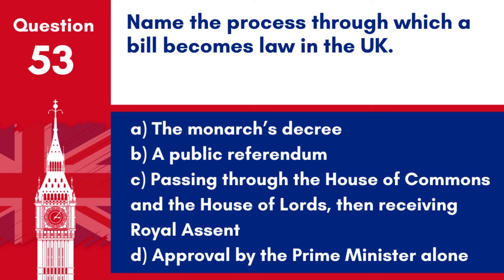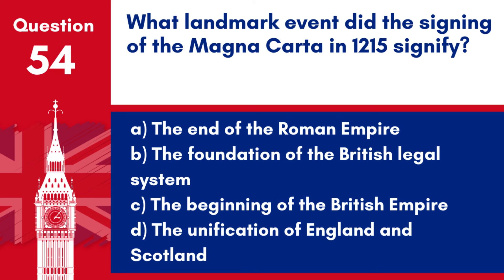Answer: c. Passing through the House of Commons and the House of Lords, then receiving royal assent. This is the standard legislative process for a bill to become law in the UK.